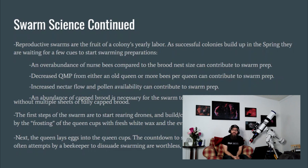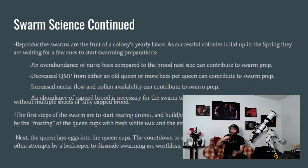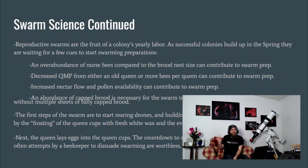Another trigger is decreased QMP — queen mandibular pheromone — from either an old queen or more bees per queen. An older queen gives off less QMP because it's a finite resource, and as you have more and more bees, there's less pheromone per bee. It's like having one vase of flowers in a small room versus in a stadium with 30,000 people — per person, the flower scent isn't very detectable. The same thing happens with queen mandibular pheromone.